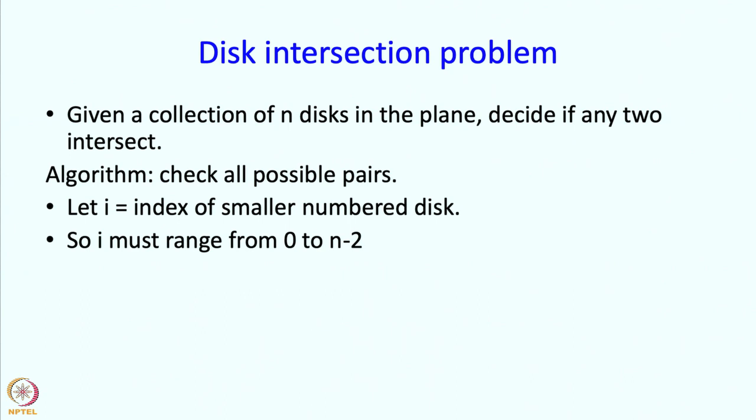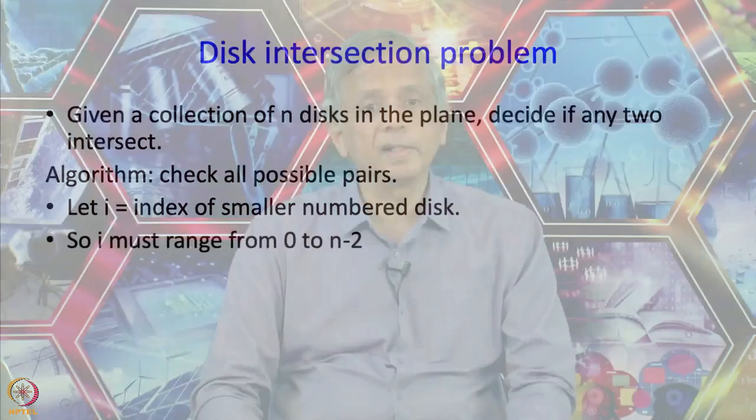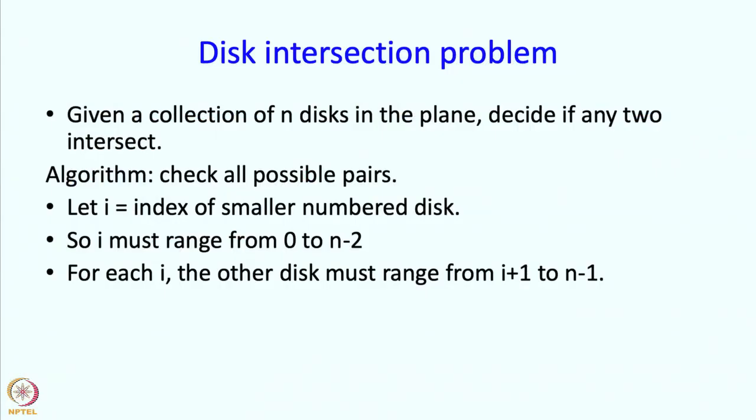So what could the other elements be, other disks in the pair possibly be? So first of all it is the smaller number disk in a pair then i must range from 0 to n-2. Because if it is n-1 then the other disk will have to have a smaller number and we are just saying that i is the index of the smaller number disk within a pair. And what should j be? For each i the other disk must range from i+1 to n-1.